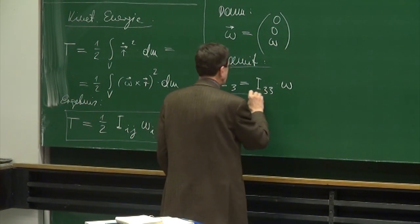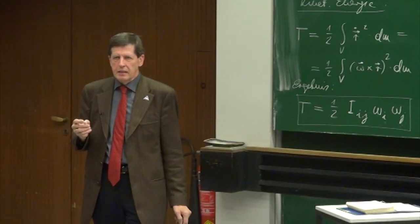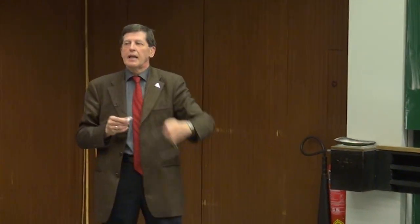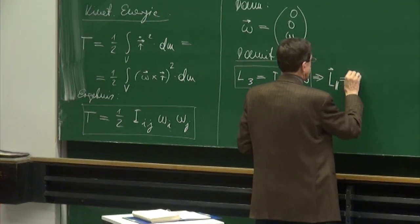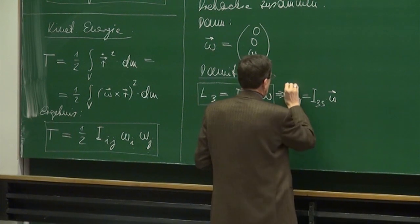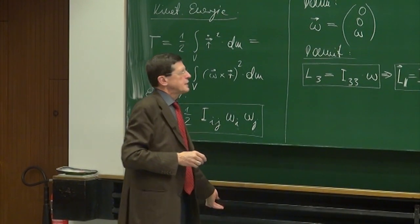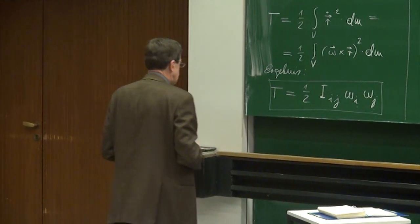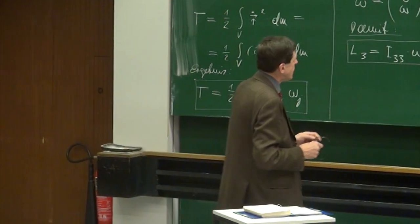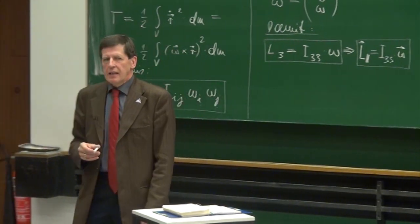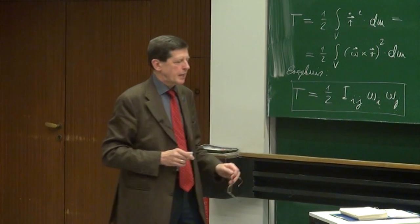Beim Drehimpuls: L₁ ist I₁₁ Omega₁ (ist 0) plus I₁₂ Omega₂ (ist 0) plus I₁₃ Omega₃. Wenn wir nur eine Rotation um die X₃-Achse betrachten, interessiert uns in erster Linie nur die dritte Komponente des Drehimpulsvektors. L₃ ist gleich I₃₁ Omega₁ (ist 0) plus I₃₂ Omega₂ (ist 0) plus I₃₃ Omega₃. Da steht dann I₃₃ mal Omega₃ und das ist Omega. Diese ganze Tensorbeziehung reduziert sich jetzt auf eine derart einfache Beziehung: L₃ ist I₃₃ mal Omega. Vektoriell: L-Pfeil-parallel ist gleich I₃₃ Omega-Pfeil.